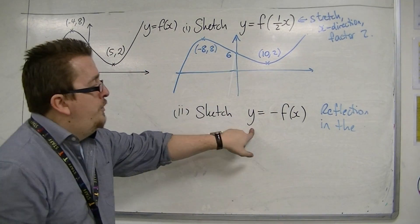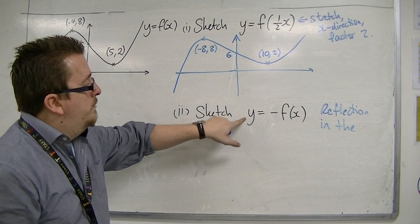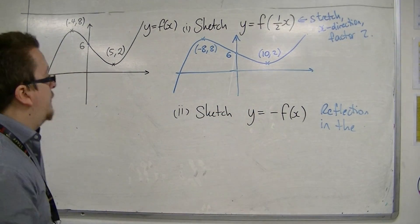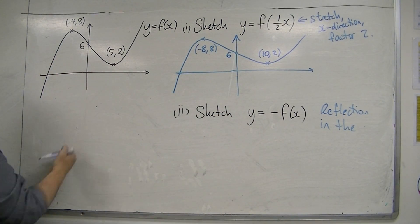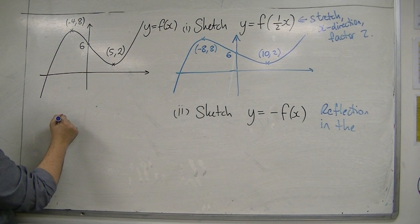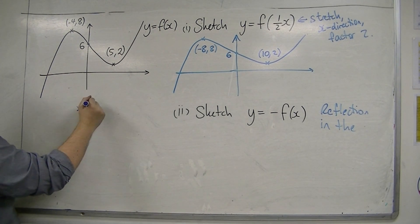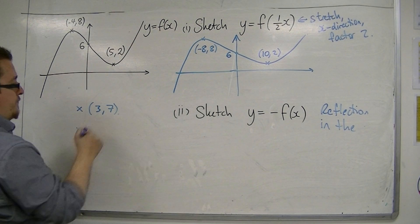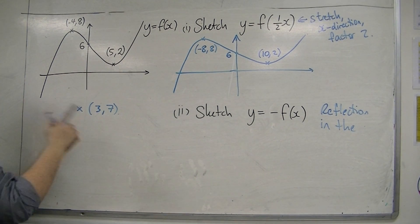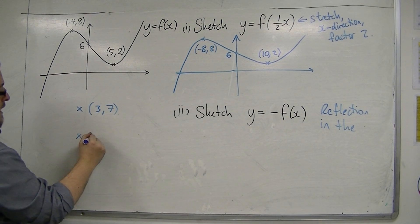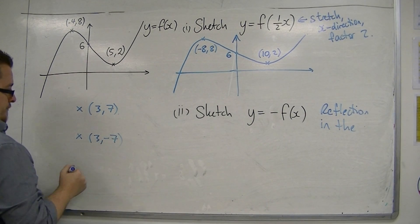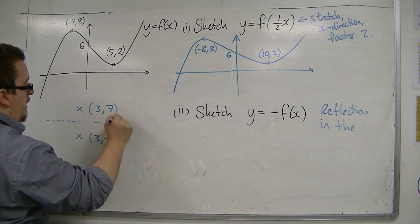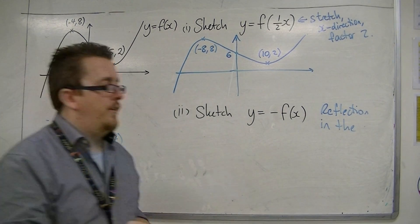Now, if you divide through by minus 1, we would have minus y equals f of x. So it's the y that is changing sign. So if I had a coordinate like 3, 7, then my new coordinate would be 3, minus 7. So it must be a reflection in the x-axis.